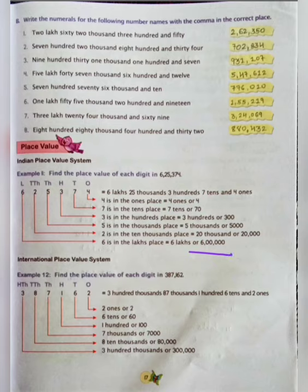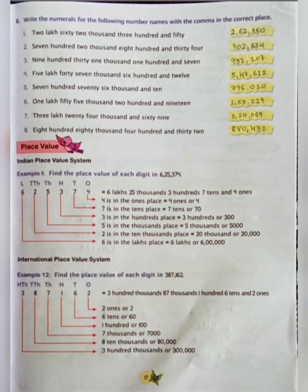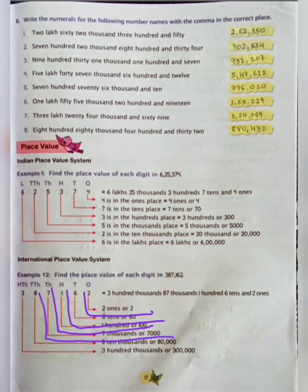Now, international place value system. Example 12. Find the place value of each digit in 3,87,162. First we will see the 1's place: 2 ones, or 2. Then 6 tens, or 60. Then 1 hundred, or 100. Then 7 thousands, or 7,000.